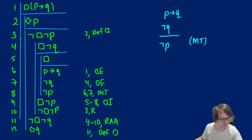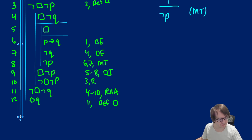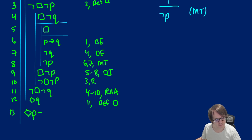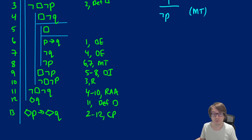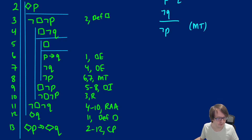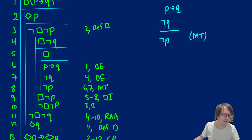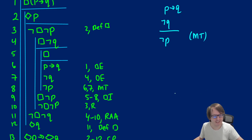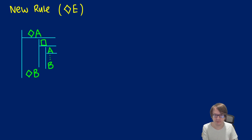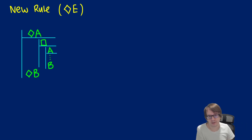At this point, we started with diamond P as our assumption in line two and got diamond Q out of it. Based on the conditional proof, in line thirteen we get diamond P → diamond Q, from lines two to twelve by conditional proof. We've proven that box(p → q) gives us diamond(p) → diamond(q). But every time we have a diamond, we don't want to repeat this whole thing — it's too much. So we'll introduce a new rule, prove it works, and then use it as a shorthand.